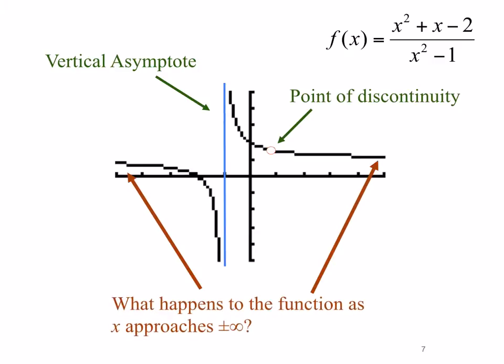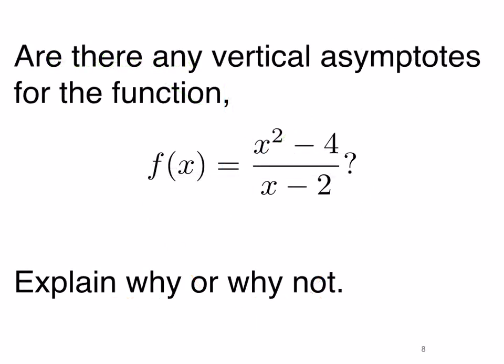In a few slides we're going to look at the end behavior of these functions — what happens when x goes to plus infinity or minus infinity. But before we do that, I'd like you to consider this problem and work it out and bring it with you to class: Are there any vertical asymptotes for the function f(x) equals x squared minus 4 over x minus 2? Explain why or why not.